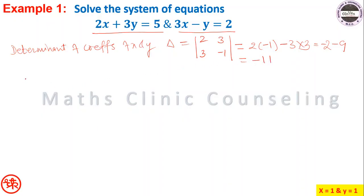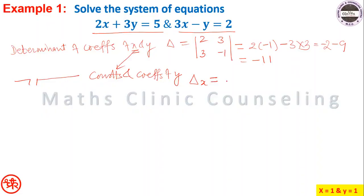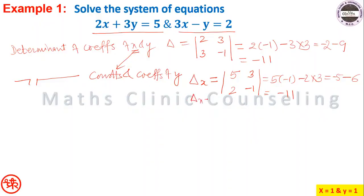Step 2: determinant of constants and coefficients of y gives delta_x. Replace the x-coefficients with the constants 5 and 2, keeping y-coefficients 3 and -1. So delta_x equals 5·(-1) minus 2·3, that is minus 5 minus 6, equal to minus 11.